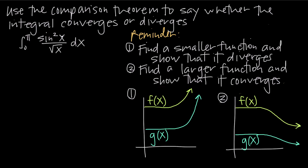If you have a trigonometric function inside your function, that's always a good place to start, especially with sine or cosine. Remember, the sine function always oscillates back and forth between the values negative 1 and positive 1. If you graph sine of x, the smallest value it ever attains is negative 1 and the largest is positive 1. In the same way, cosine oscillates back and forth between negative 1 and positive 1. So we start with sine squared of x, knowing that sine of x is always greater than or equal to negative 1 and less than or equal to positive 1.